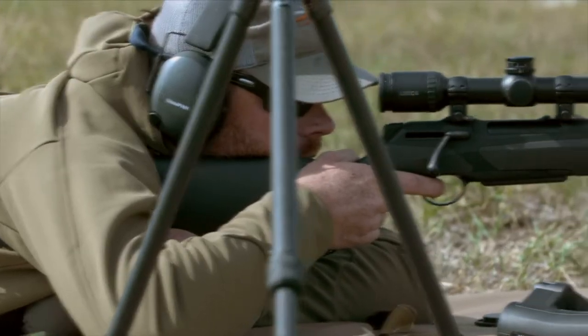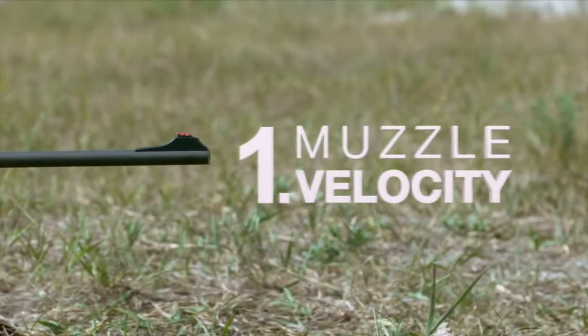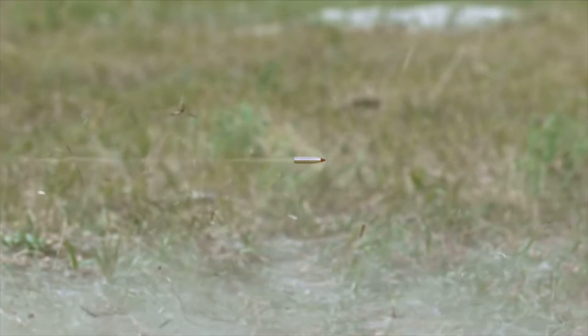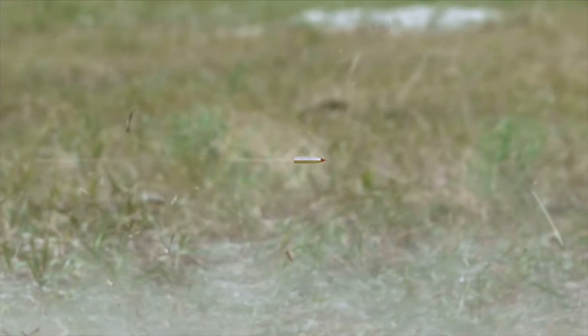The first parameter is probably the simplest, muzzle velocity. Muzzle velocity is simply the speed the bullet has the moment it leaves the barrel. A faster velocity equates to a flatter curve.